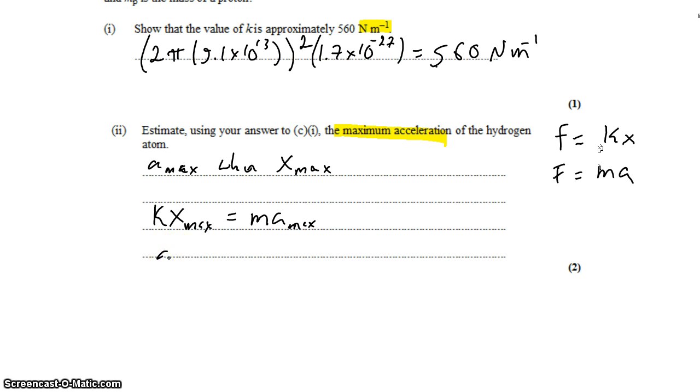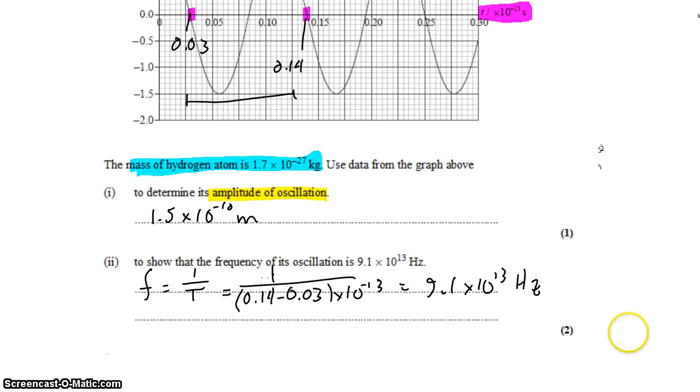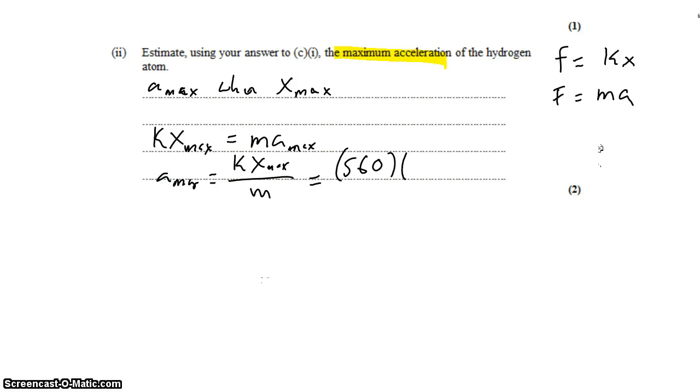Solving for maximum acceleration, we get k times that maximum displacement divided by the mass. We know what k is. The maximum displacement we found in part one, 1.5 times 10 to the negative 10 meters.